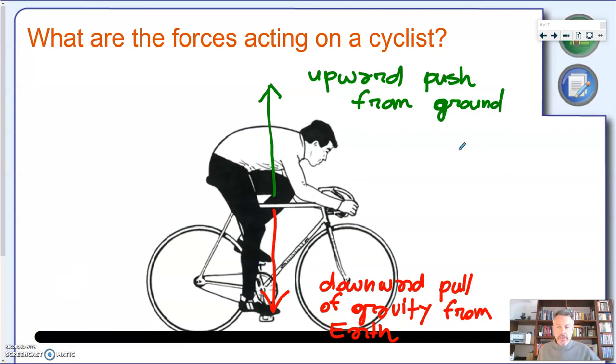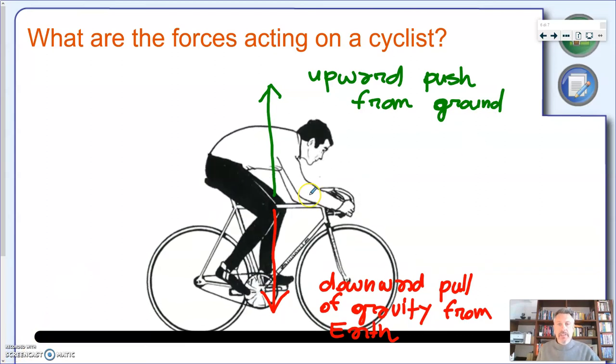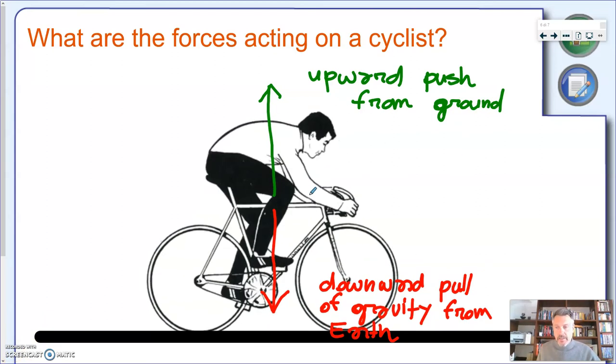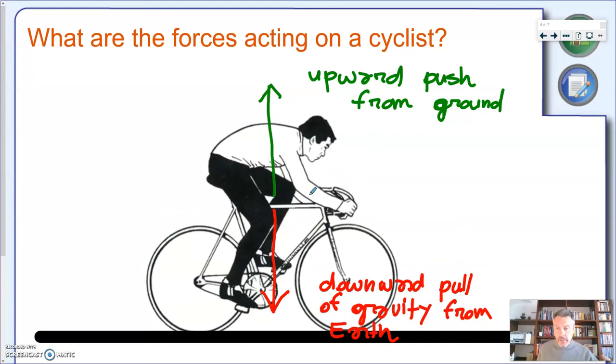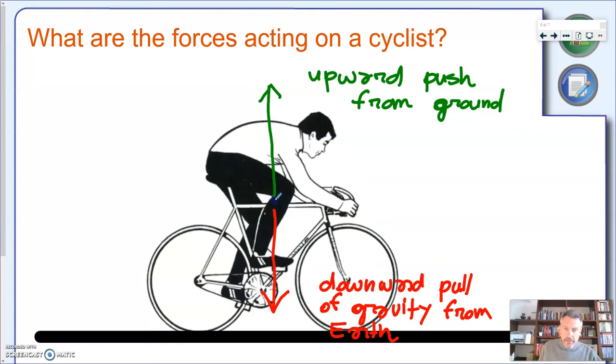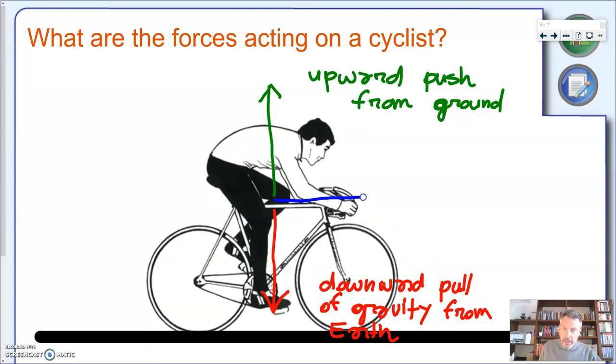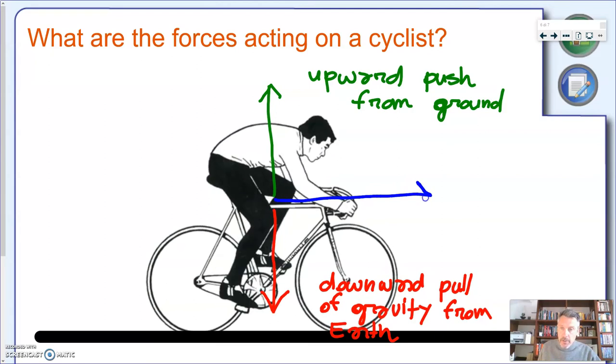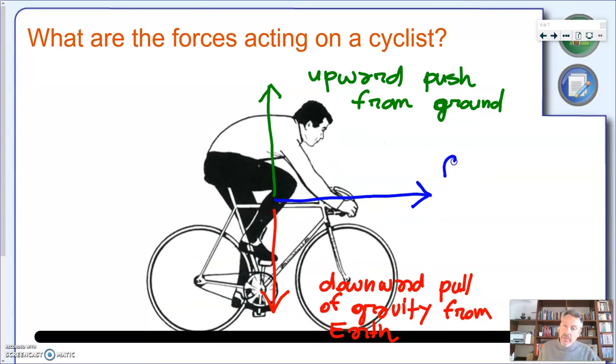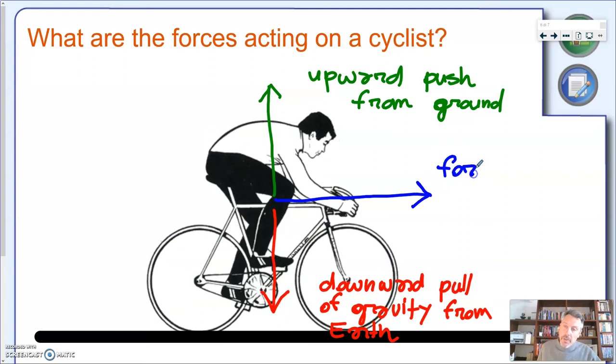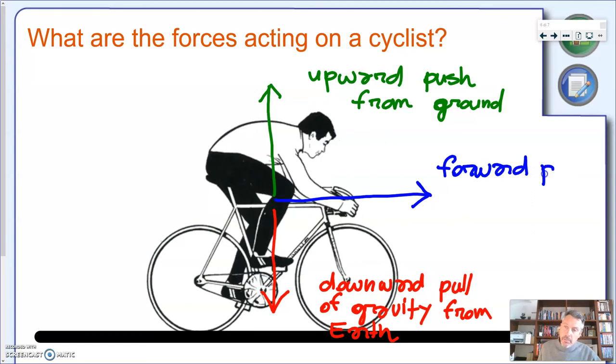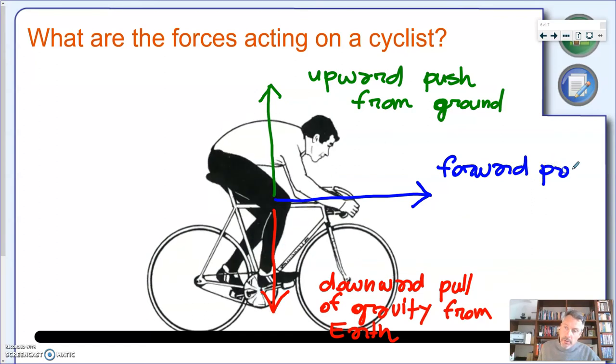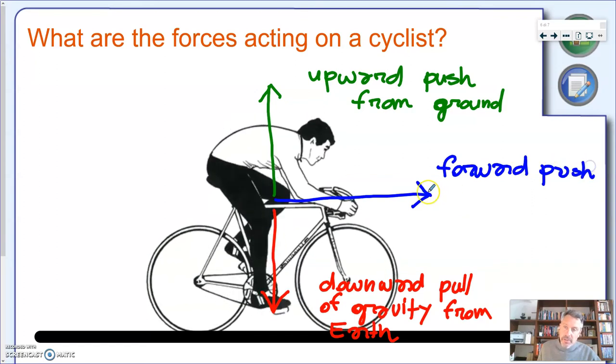This is, of course, not the end of the story because, as you can see, our cyclist is cycling hard. So, it's pushing forward the whole thing. So, we're going to add another force, this time to the right. And we're going to say this is the forward push from the cyclist.